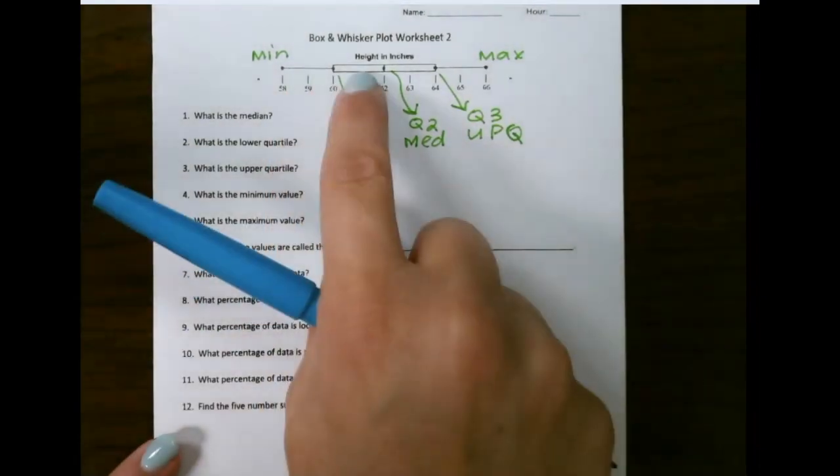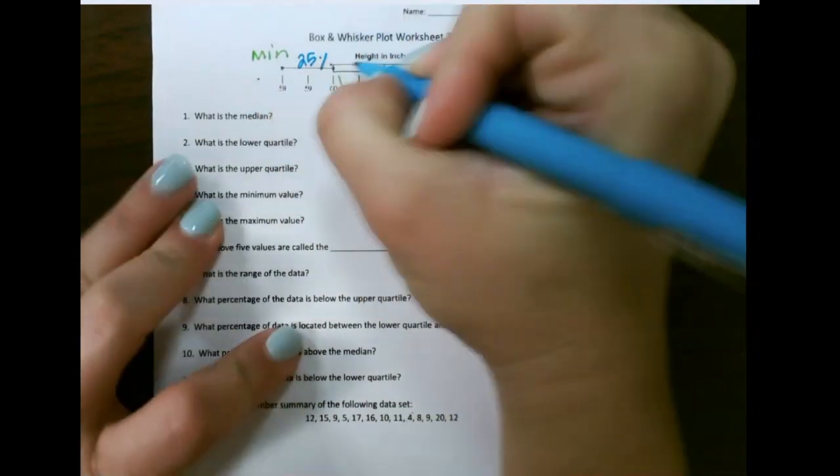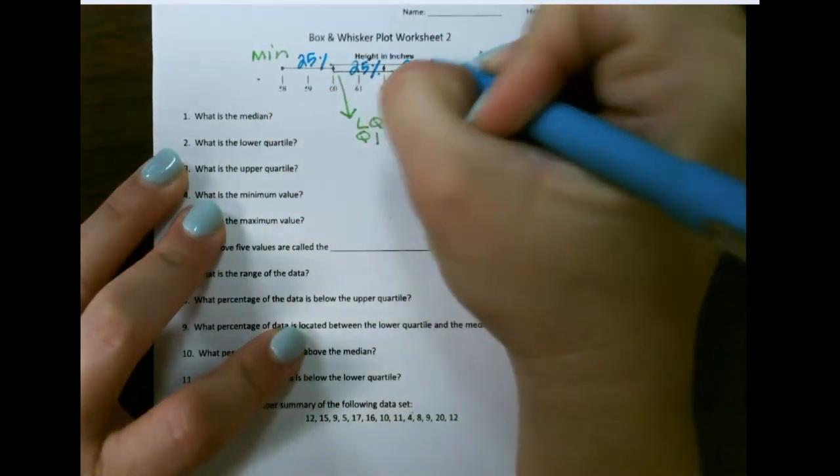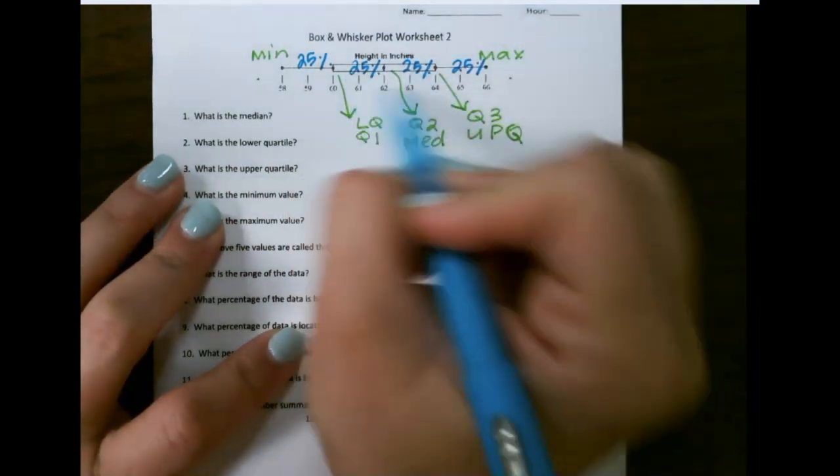Remember that each segment or quartile of our graph is 25% of our data, with the middle 50% being in our box here.